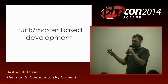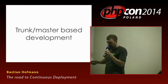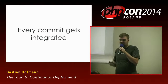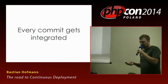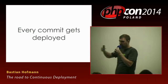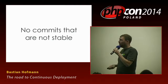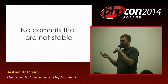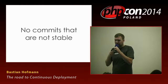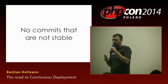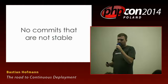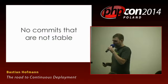Instead of that, people came up with trunk- or master-based development. Every commit gets integrated automatically — you just commit into your trunk or master branch. That means potentially every commit gets deployed automatically, giving us continuous deployment. That also means regarding quality, you should not commit something that is not stable or able to be deployed. This needs a certain mindset: not just committing random stuff with var_dump and die in there, because that would probably break the platform.